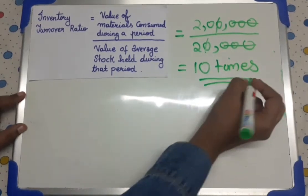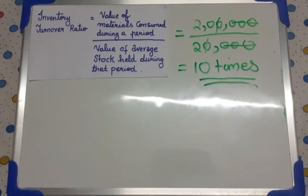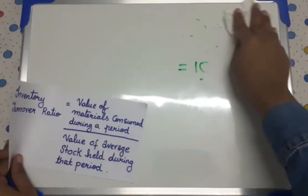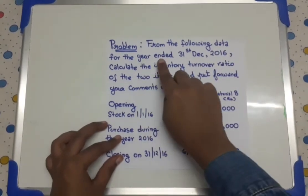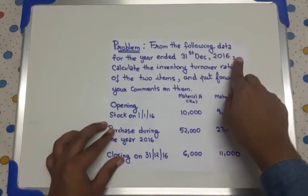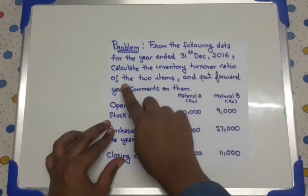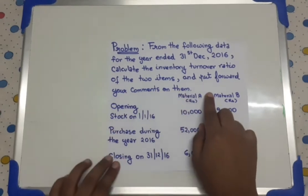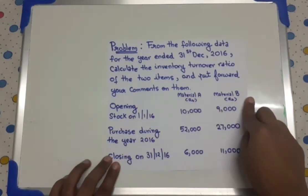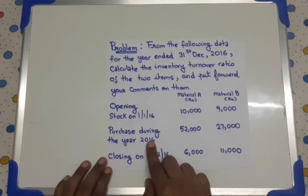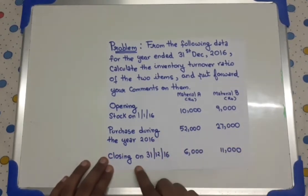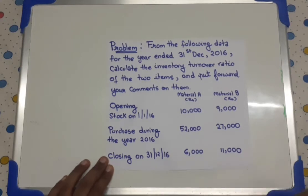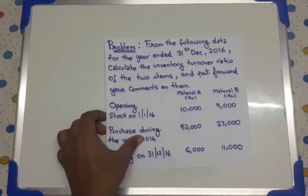We solved one more problem. Now let's look at a bigger problem. The question is again given in the description. From the following data for the year ended 31st December 2016, calculate the inventory turnover ratio of two items — material A and B — and put forward your comments on them. They have given us opening stock, purchases, and closing stock for both A and B.